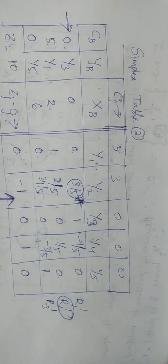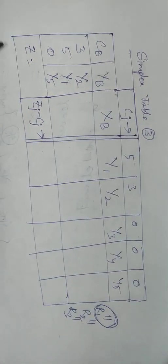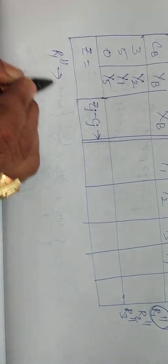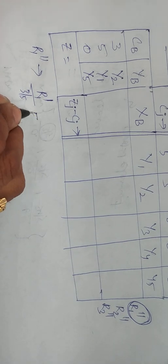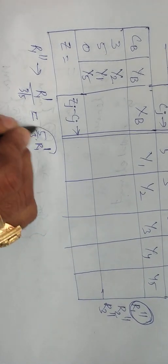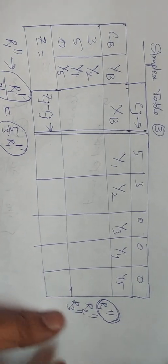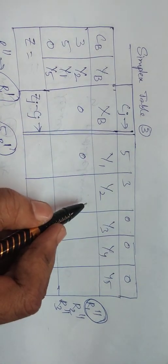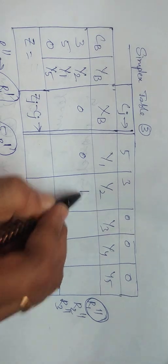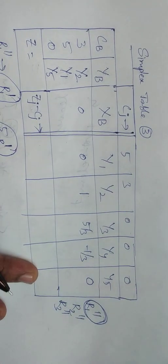The pivotal element 3/5 is in the first row (R1 dash). So R1 double dash = R1 dash ÷ (3/5) = (5/3) × R1 dash. Computing: 5/3 × 0 = 0, 0, then 3/5 becomes 1, next element 1, then 5/3 × (−1/5) = −1/3, and 0. These are the elements for R1 double dash.